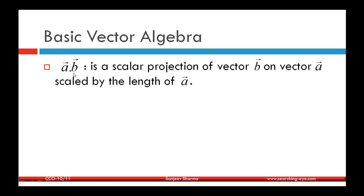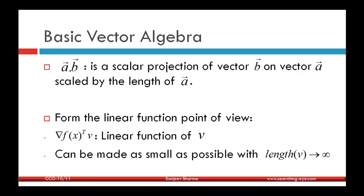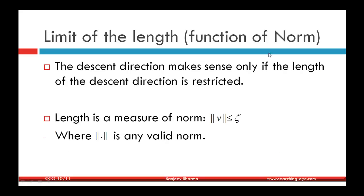The dot product a·b equals the scalar projection of b onto a multiplied by the length of a, and we can make this dot product arbitrarily large or small by increasing the length of a. To make this dot product finite, we must restrict the length of a. Similarly, since the directional derivative is a linear function of v, to bound it we must bound the length of v using some norm. Therefore the descent direction only makes sense when its length is restricted, and that restriction is: the norm of v is less than or equal to some positive parameter (theta = 1 for the normalized direction).